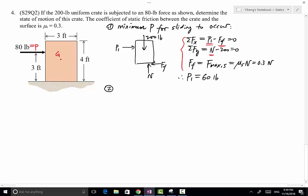And then I'm going to calculate the minimum P for tipping over to occur. So we have to draw this free body diagram a little differently because even though we have the same weight force, same location for the force P2, that's the applied force,